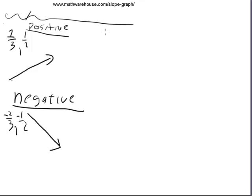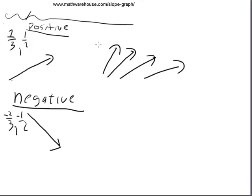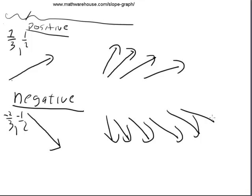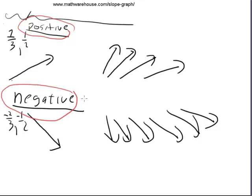Let's confirm something: all positive slopes go in this general direction — so if you see something slanted up to the right, it has to have a positive slope. And all lines that go down to the right also have a negative slope. This is helpful to double check your answer. When you're done calculating slope, if your line points up to the right, your slope really has to be positive. If your slope slants down to the right, it has to be negative. If you get a different number, double check your work.